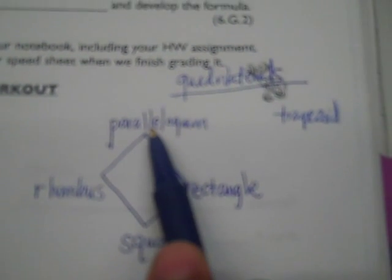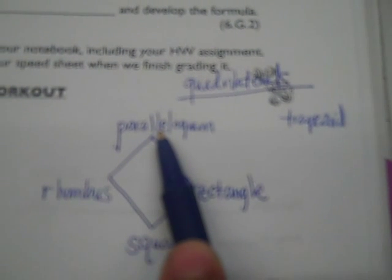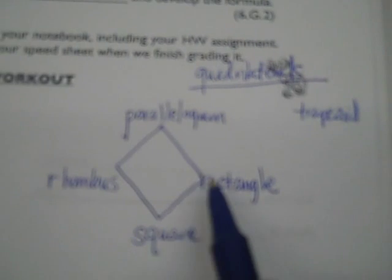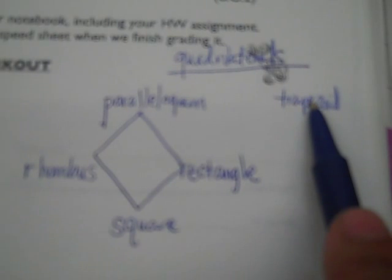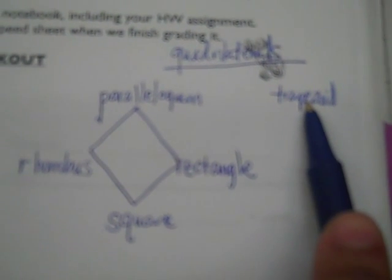If you have two pairs of parallel sides, then it will fall into the parallelogram category, and from there you can see if it can be broken down into any more proper names for the shapes. If it only has one pair of parallel sides, then it will be a trapezoid. And if it has no pairs of parallel sides, then it will just be a quadrilateral.